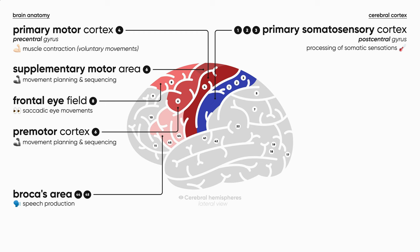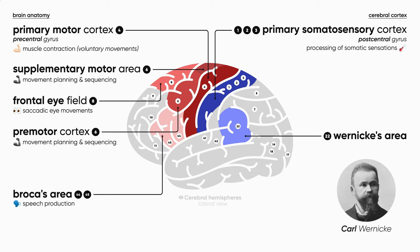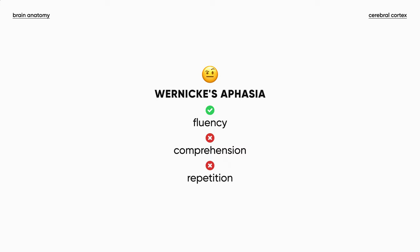Now let's look at the Wernicke's area, located within the posterior part of the superior temporal gyrus. It is predominantly, but not exclusively, responsible for language comprehension — both reading and spoken language. Like Broca's area, it is located only in the dominant hemisphere, left or right. The lesion of Wernicke's area is called Wernicke's aphasia, or receptive or sensory aphasia. Its key feature is impaired comprehension, commonly associated with fluent but meaningless speech, called word salad.